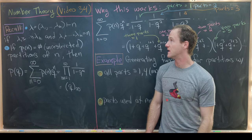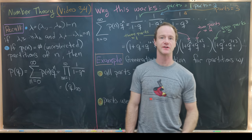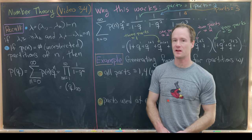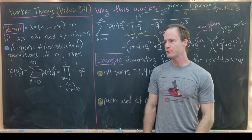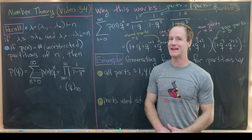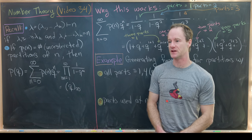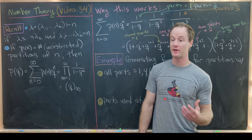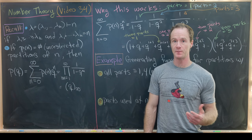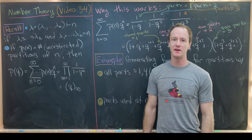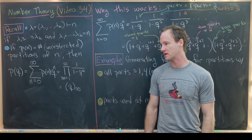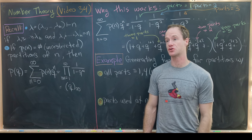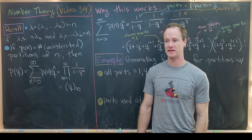This is the 34th video in a series supporting a course in elementary number theory, and I'm pretty sure this is the next to last video. I already wrapped up my course with the previous video, but I thought I would add two videos to this playlist so that we could prove the Rogers-Ramanujan identity.